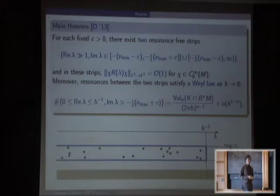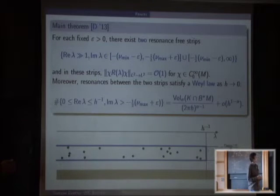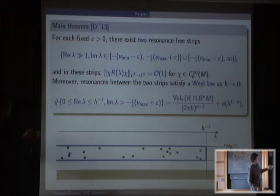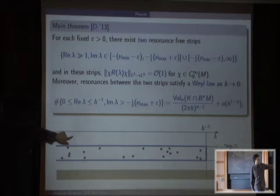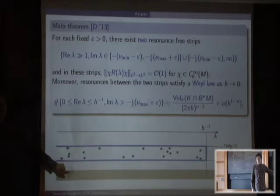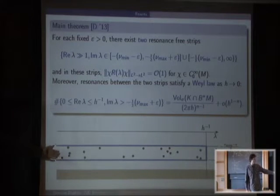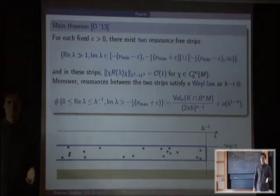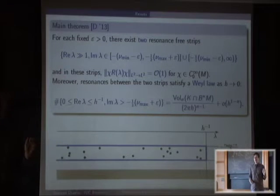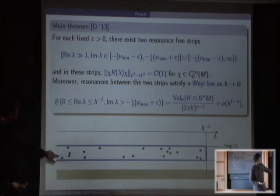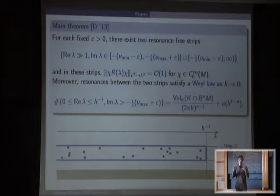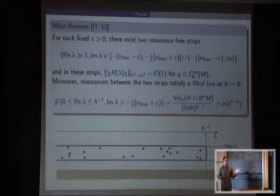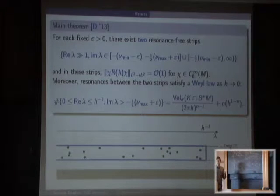Here is the main result. Under all these assumptions — fixing ε — and under the pinching condition, you have two resonance-free strips: a spectral gap up to half the minimal expansion rate, and a gap from half the maximal expansion rate to the minimal expansion rate. That gap is non-empty because of the pinching condition. In between the two strips, you can count resonances, and the counting follows a Weyl law: the power is related to the dimension of the trapped set, and the constant in this Weyl law is the symplectic volume of a naturally chosen chunk of the trapped set — which was a symplectic manifold.